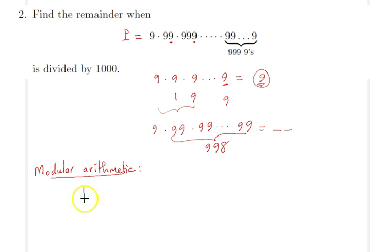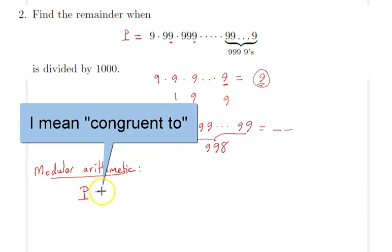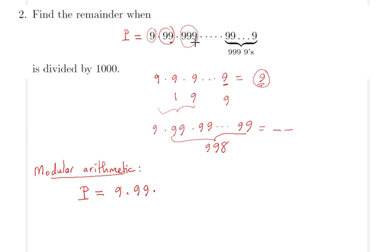In modular arithmetic, we would realize that P is equal to 9 times 99 times 999, so I will be looking at in mod 1000. In mod 1000, 999 would be simply negative 1, right?